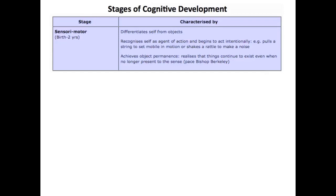The very first of those stages was the sensory motor stage, which was birth to two years. In the sensory motor stage, he was talking about the infant up to perhaps two years old who differentiates themselves from other objects, sees themselves as an agent of action, and begins to act intentionally. You ever had a child reach out and pull on the nose or cry when they wanted something? Piaget put that in the sensory motor stage. And during this time, they began to develop what is called object permanence.